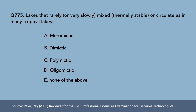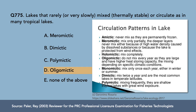Question 5: Lakes that rarely or very slowly mix, thermally stable, or circulate — as in many tropical lakes — A) meromictic, B) dimictic, C) polymictic, D) oligomictic, E) none of the above. The correct answer is letter D, oligomictic.